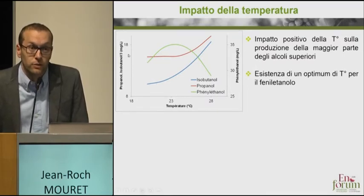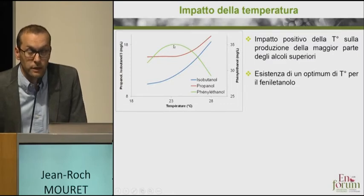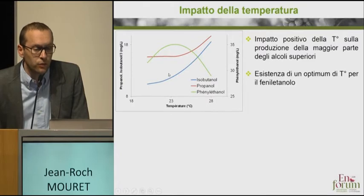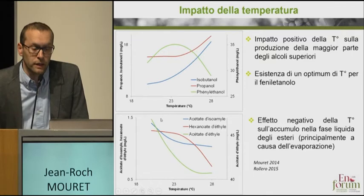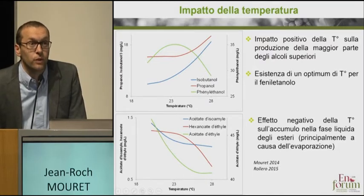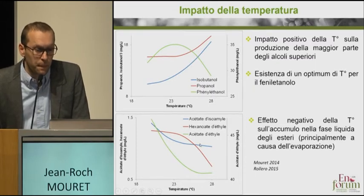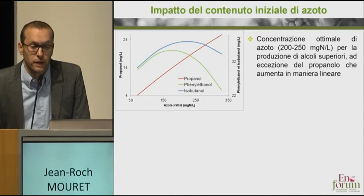Here you have the final concentrations showing the balance of esters and the impact of temperature on alcohols and esters. For propanol and other alcohols such as isobutanol and phenylethanol, the higher the temperature, the bigger the production — with the exception of phenylethanol, which reaches an optimum and then declines. The opposite applies to esters, whether acetate or ethyl acetate: with an increase in temperature, you have lower production due to evaporation, not due to a different metabolic mechanism. At 28 degrees centigrade, I have many alcohols and many esters, which means the style of the wine changes completely depending on the temperature I set.